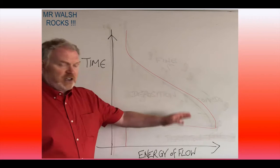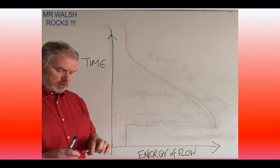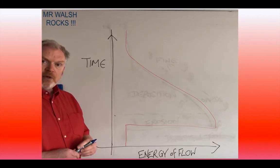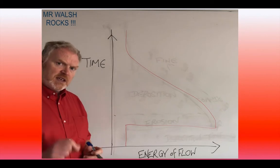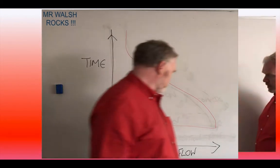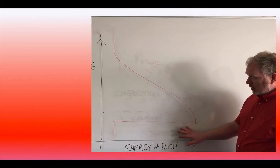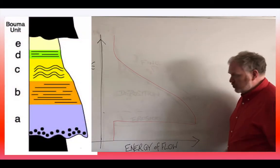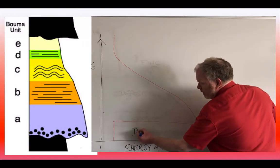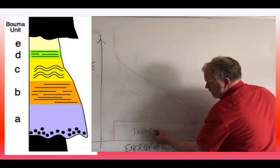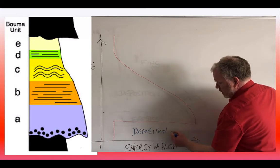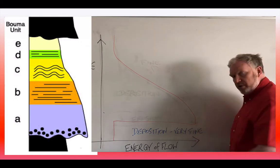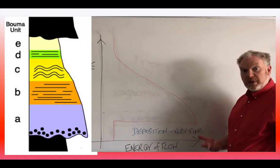So this energy profile for one turbidity flow can show us the type of processes that may be occurring. Let's think about what they are. The normal deposition that we find in a deep ocean environment will be very fine, typically a black mud.